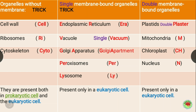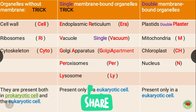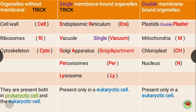For double membrane bound organelles, there are four: plastid, mitochondria, chloroplast, and nucleus. Plastid gives 'plaster', mitochondria gives 'M', chloroplast gives 'Ch', and nucleus gives 'N'. So the mnemonic is: 'Double plaster machine' — M, Ch, N forming 'machine'. These double membrane bound organelles are found only in eukaryotic cells, which also contain single membrane bound organelles.